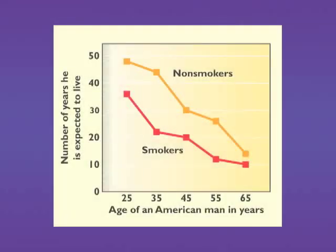For our next problem, according to our graph, approximately how much longer is a 25-year-old non-smoker expected to live than a 25-year-old smoker? Let's answer the first part of the question. If we look at a 25-year-old non-smoker, that will be the top graph. So if you go to 25, go up and read your graph, that will be 48 years.